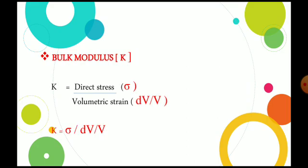Next is bulk modulus, denoted as K. Bulk modulus is direct stress divided by volumetric strain. Volumetric strain is the change in volume by the original volume. So bulk modulus = direct stress / volumetric strain.